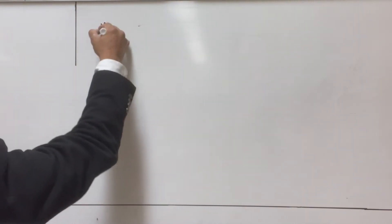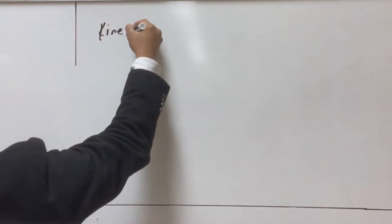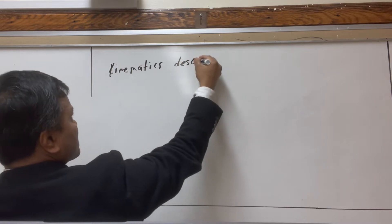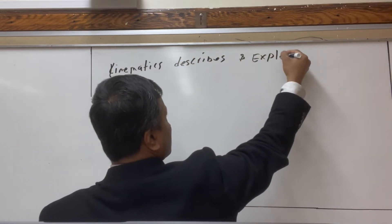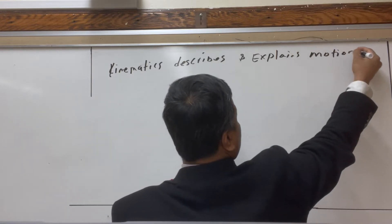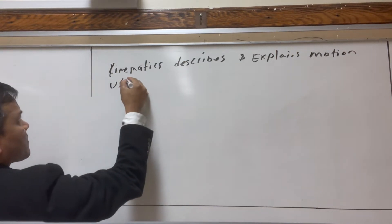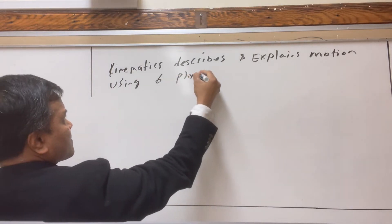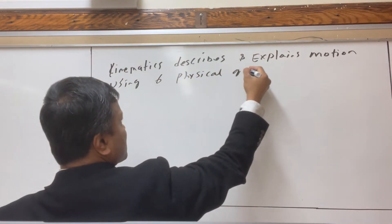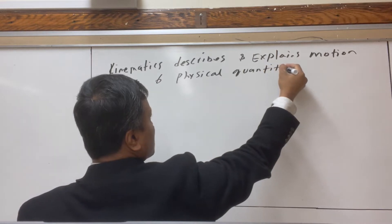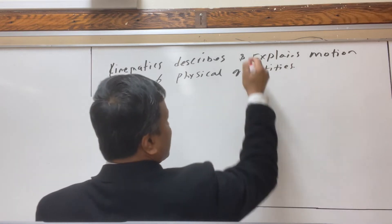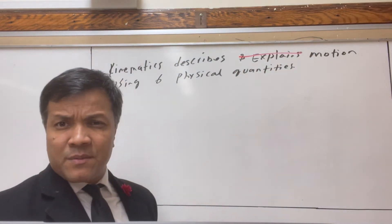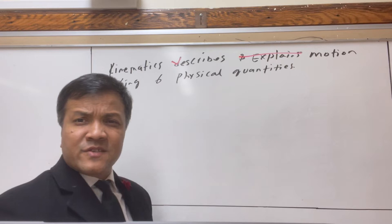We're going to start our conversation with kinematics. So what is kinematics? Kinematics describes and explains motion using six physical quantities. Actually, let me correct that — kinematics never explains motion. Kinematics only describes motion. So pay attention to this.